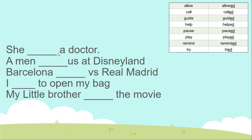She — a doctor. Recuerde que 'she' significa 'ella'. She called a doctor. 'Call' — como es en pasado, se le agrega la E y la D, entonces sería 'she called a doctor'.